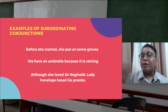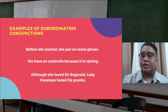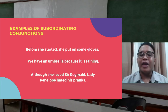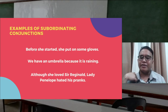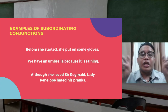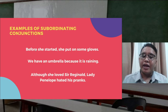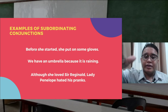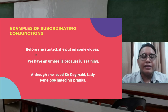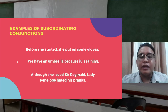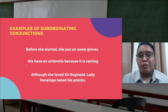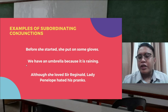Same with: 'We have an umbrella because it is raining.' The phrase 'because it is raining' is not a complete sentence on its own — it must be attached to the main clause. Another example: 'Although she loves Sir Reginald, Lady Penelope hated his pranks.' 'Lady Penelope hated his pranks' is a complete sentence, but 'although she loved Sir Reginald' is not. These subordinate clauses cannot stand alone — they need a main clause to be complete.